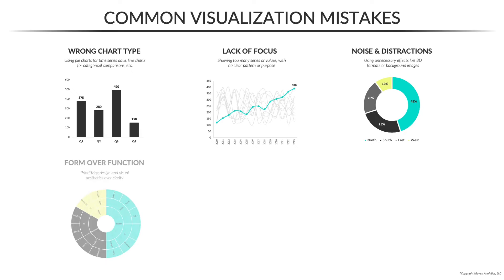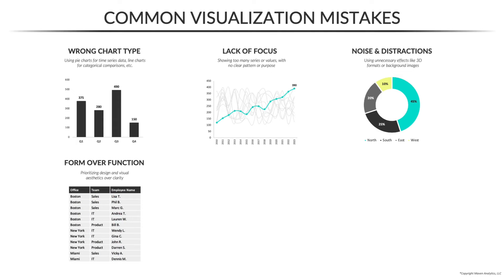Next up is a pretty common one that we see all the time in our data challenges: prioritizing form over function. That essentially just means picking charts based on what would look cool on a poster, as opposed to what communicates the information most clearly. Here we see a sunburst chart showing employees by team and office location, which looks pretty sweet but is actually quite tough to interpret. So for something like this, you may not choose to visualize that data at all if a simple table like this one provides the exact information you need.